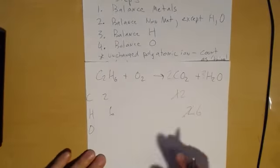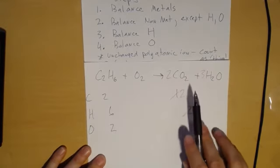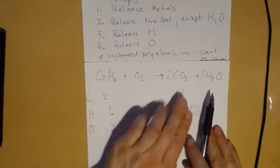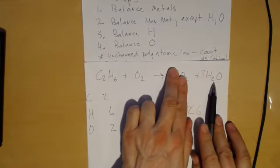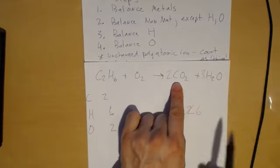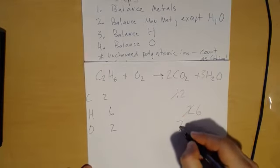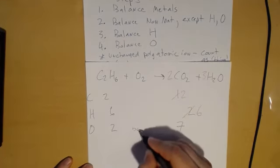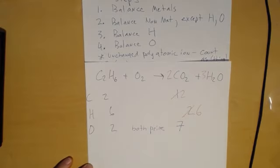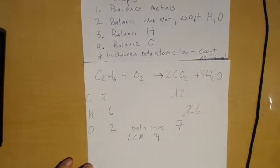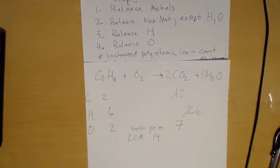Now for oxygen: on the left I have two. On the right, how many oxygens are in this term? Three — because it's three times one. How many oxygens in the water term? Four. So I actually have seven total. Both two and seven are prime numbers.